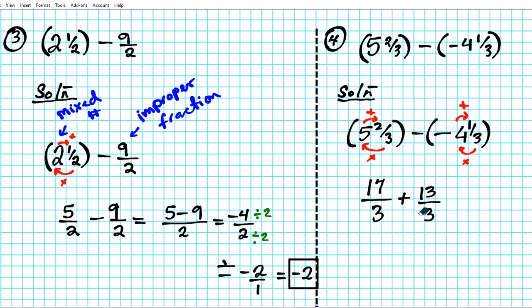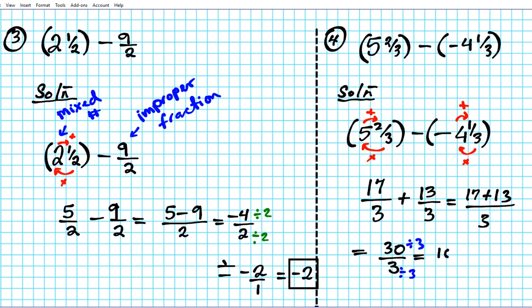We go ahead and add these two numbers. They have the same denominator, so we just add the numerators: seventeen plus thirteen divided by three. Seventeen plus thirteen is thirty, divided by three — three goes into thirty ten times. So dividing numerator and denominator by three gives us ten over one, which equals ten. That's your final answer.